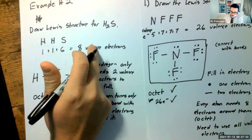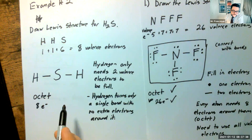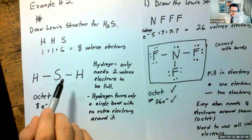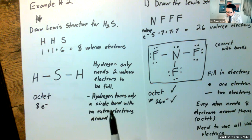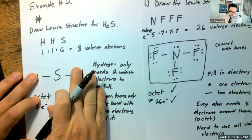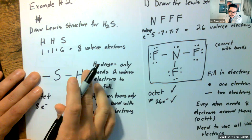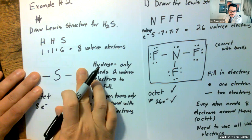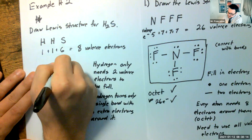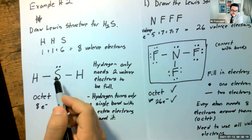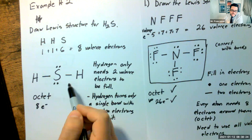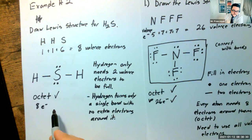Checking our rules for H2S: we need to verify the octet and that we've used all eight electrons. The hydrogens are okay. Sulfur in the center currently has four electrons — two in each bond connecting to the hydrogens. It needs eight, so we add lone pairs: two, four, six, eight. Now sulfur has its octet. We've also used all eight of our valence electrons, so that's correct.